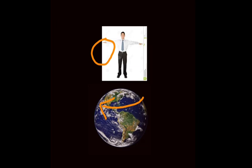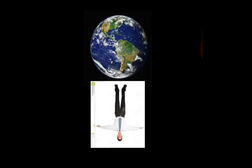Now consider the case where wind is deflected to the right-hand side in the southern hemisphere. Suppose you are standing at the South Pole — where is your right-hand side? Your right-hand side is this direction, so the wind will be deflected to this direction.